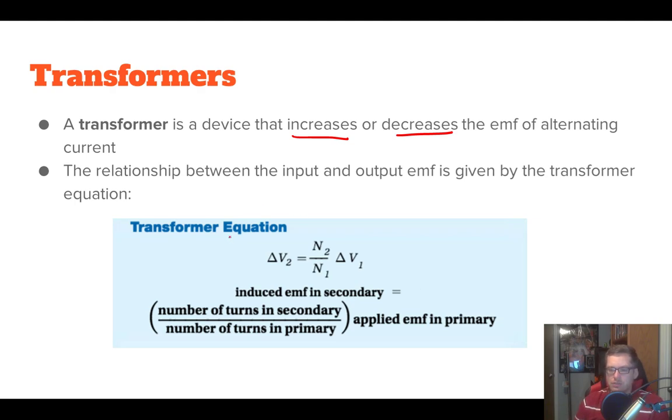All right. And so the transformer equation is this guy right here. And so note that these are not decepticons and autobots, right? These are these little gray boxes. A lot of times you'll see them in like Godzilla movies. When Godzilla starts walking through power lines, this is where the sparks start flying is at the transformers. And so this is the formula is pretty easy to use. Delta V2 is the induced EMF in your secondary coil. All right. And then N2 is your turns in your secondary and N1 is the turns in your primary and delta V1 is the applied EMF in the primary.